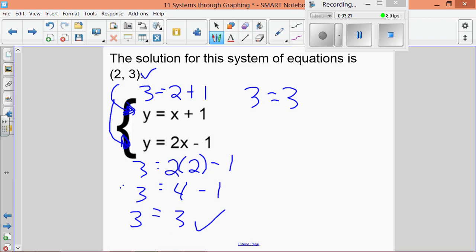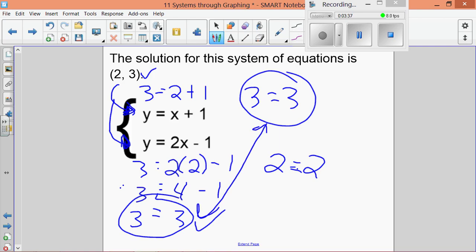This one just happens to work out so that they both are 3 equals 3. But remember, it just has to be a true statement. This could be 3 equals 3, and if this one had worked out to be 2 equals 2, that would also satisfy both equations. We get a true statement either way. It doesn't have to be the same numbers in each one; it just has to be true for each equation.